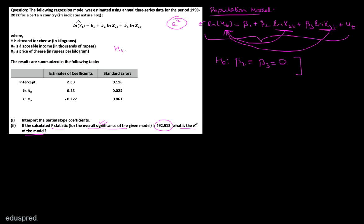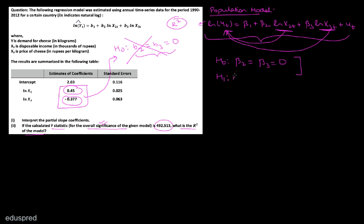Do not write the null hypothesis as B2 equal to B3 equal to 0, because you can never hypothesize about the value of the estimators. We already know the values of B2 and B3; what we try to do in hypothesis testing is say something about the population parameters. Your null is beta 2 and beta 3 both equal to 0, and the alternative is that at least one of them is not equal to 0.